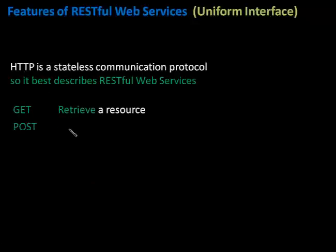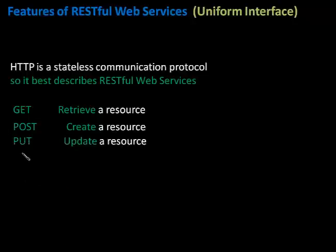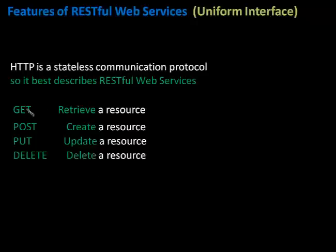RESTful web services uses four main HTTP methods: GET to retrieve a resource, POST to create a resource, PUT to update a resource, and DELETE to delete a resource. When you write RESTful web services, you implement all these four methods for each resource in your program.